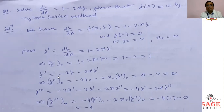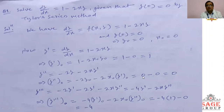y'' = −2y − 2x·y'. Using the product rule for the term 2xy: differentiate to get −2y − 2x·y'. At x = x-naught = 0: y''(naught) = −2·y-naught − 2·x-naught·y'(naught) = −2·0 − 2·0·1 = 0. So y''(naught) = 0.